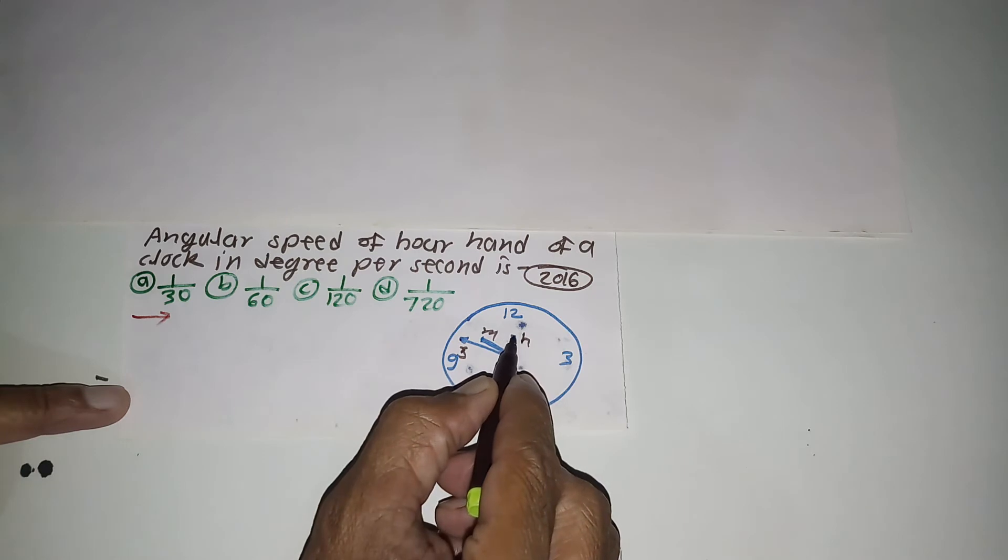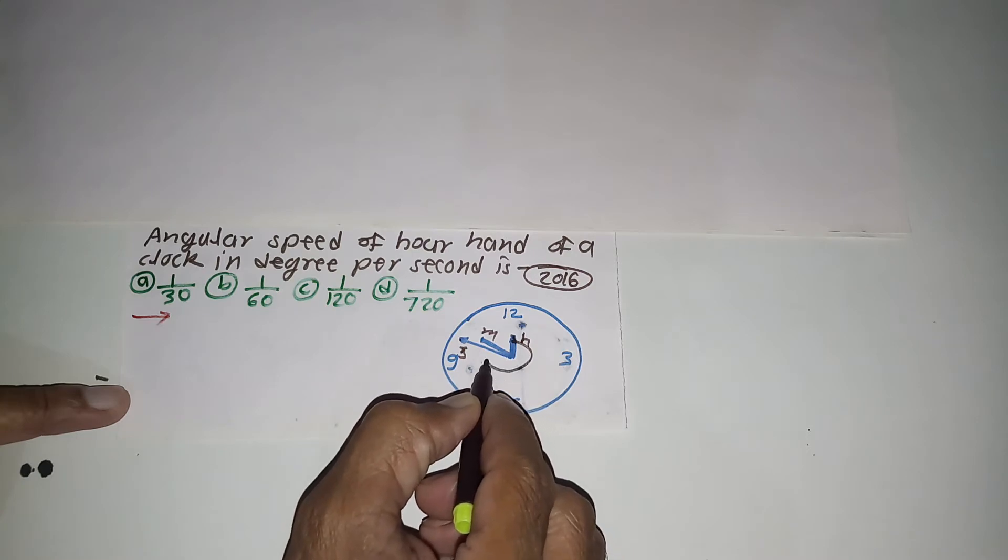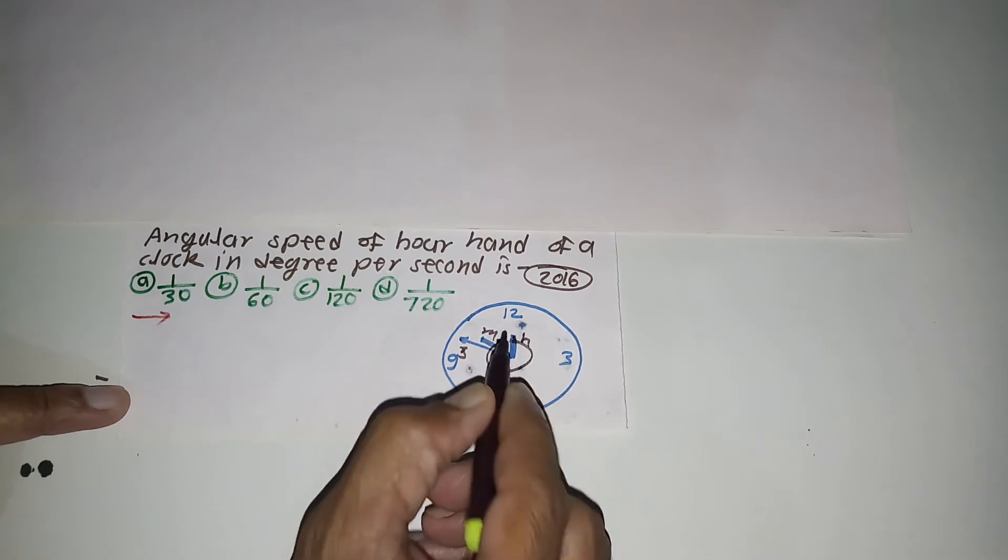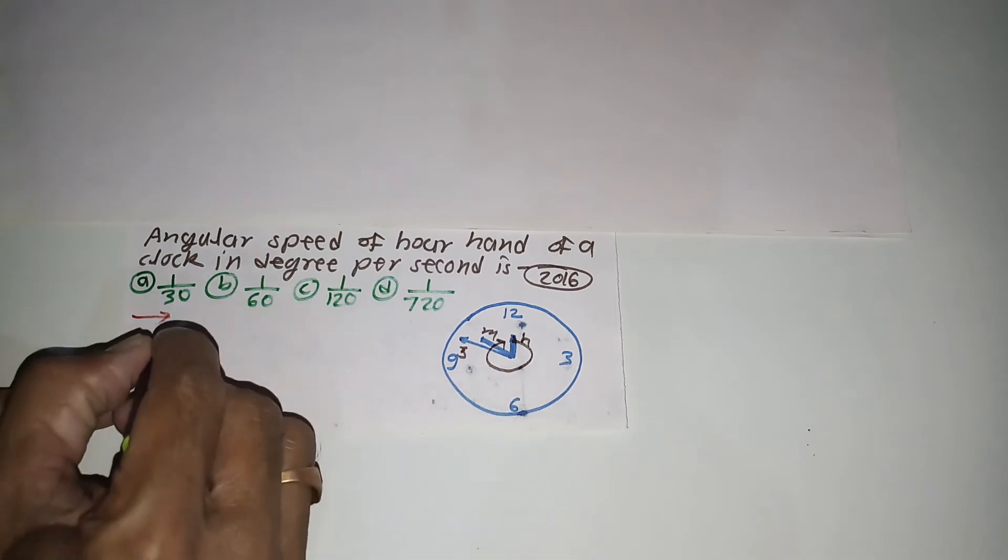This tip is doing circular motion and angular speed of that hour hand is represented by omega, and especially omega h.